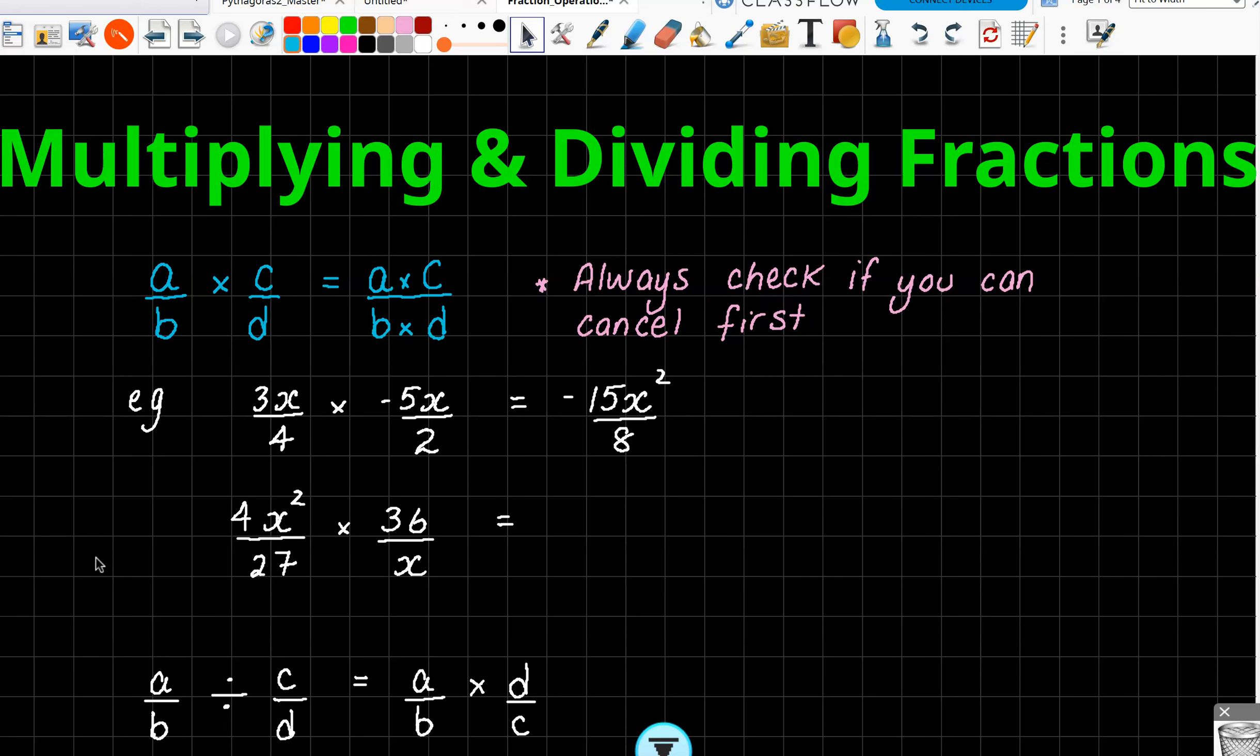And when we have a simple situation like this, you just times the tops together. So 3 times minus 5 gives you the minus 15. X times X gives you the X squared. 4, 2 is 8. All good, all good. Are we happy with that?